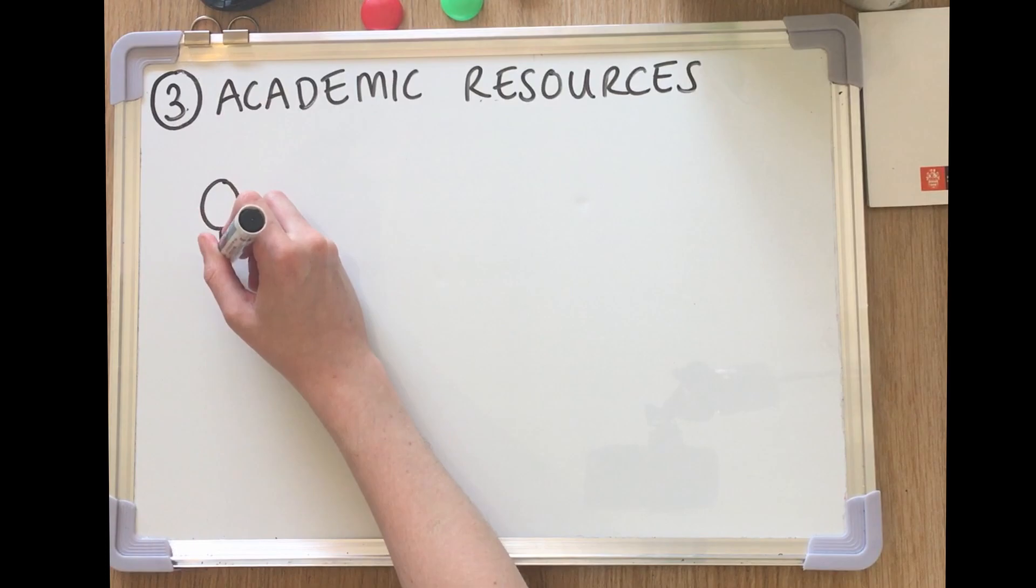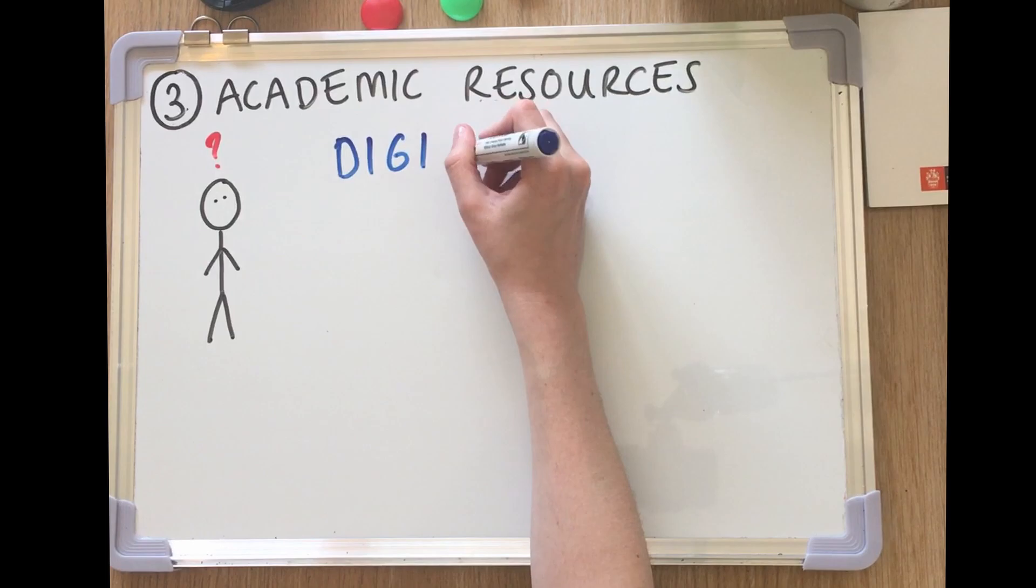Number three, academic resources. Finding and using academic resources such as journal articles and academic writing can be difficult when you first arrive at university.